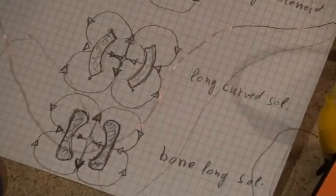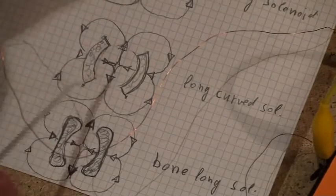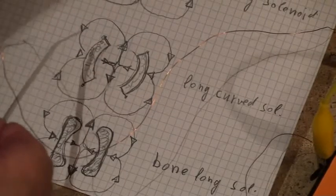Then I thought, what could we do with a curved magnetic current? Solenoid, this curve here. So, what could happen?